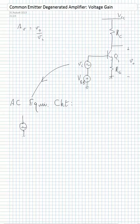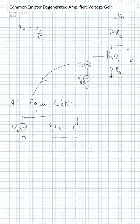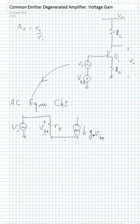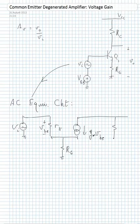In that case, I'll just have an input source VI feeding directly into the base of Q1. Q1 is replaced by the hybrid-pi model, consisting of a resistor Rpi and a voltage-controlled current source given by Gm*VBE. The emitter is connected to ground through RE, and the load resistor RC, instead of being connected up to VCC, is connected down to ground — because VCC is an AC ground, the output voltage appears across it.